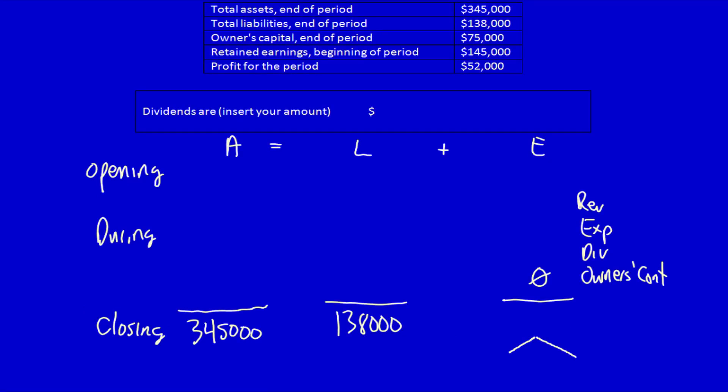Owners capital end of the period $75,000, and we would add that in to retained earnings once we find it out. Retained earnings at the beginning of the year. Well, we know equity equals owners capital at the beginning of the year plus retained earnings. So here we know that retained earnings at the beginning of the year is $145,000.